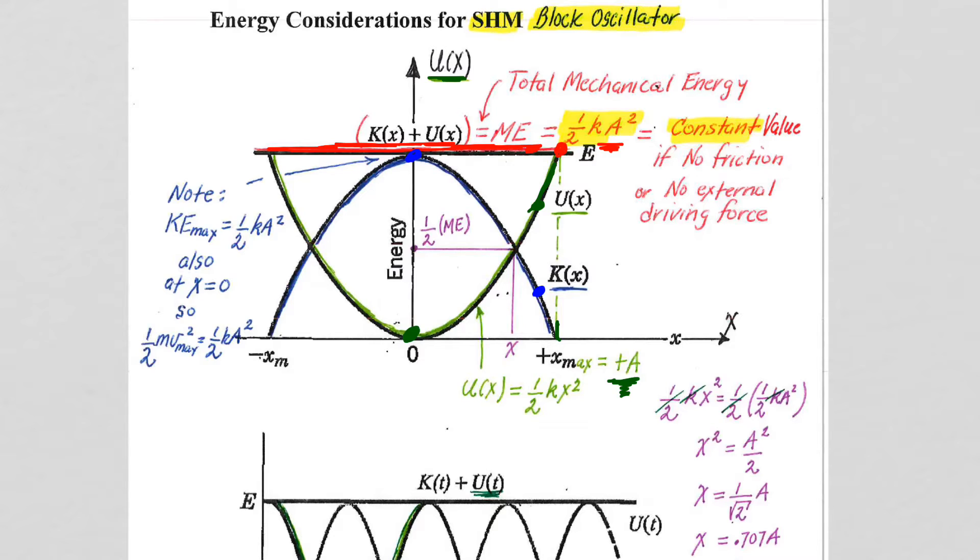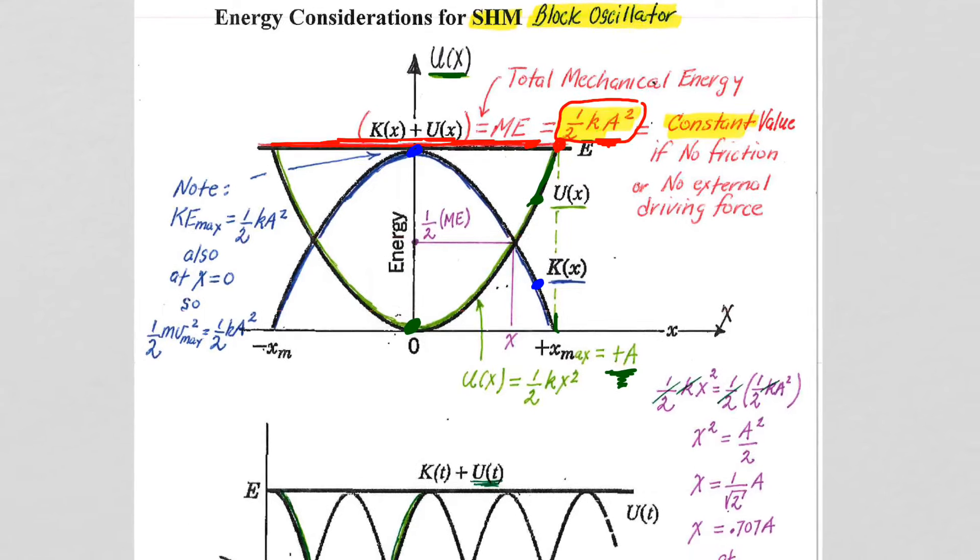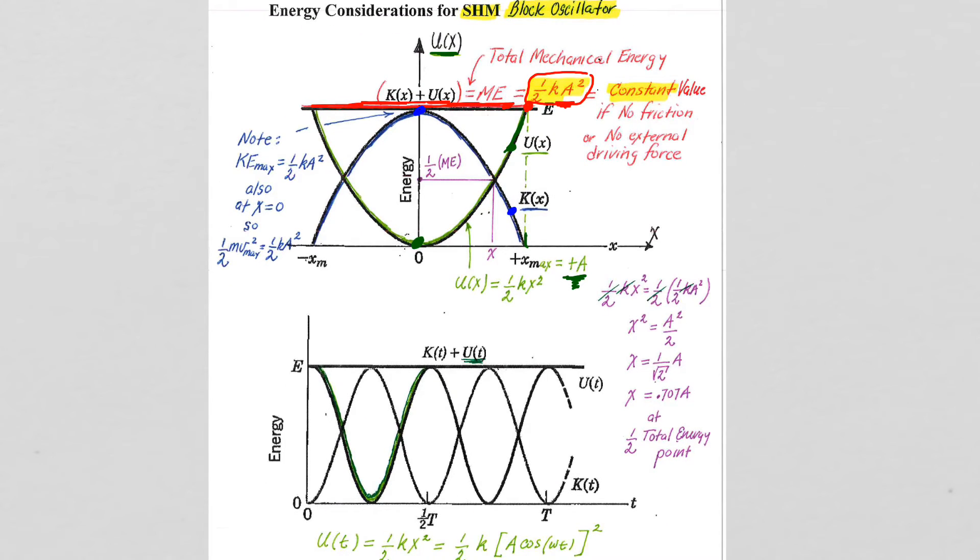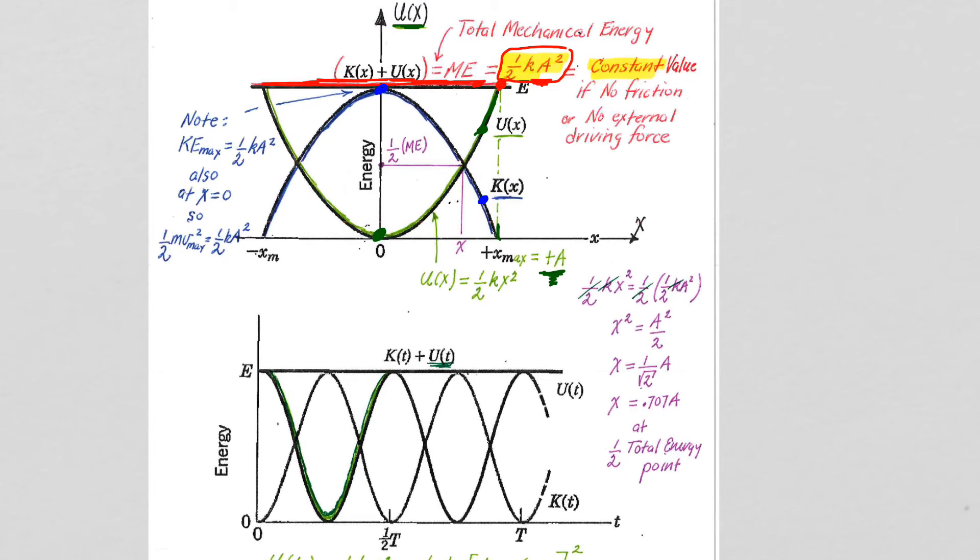So you really want to think of one-half ka squared as an actual joule value, and that's locked in. So even if you're not given a value, think of it as a locked in joule value, and then it's going to be shared between potential and kinetic as we go along. And obviously for the block oscillator, we are oscillating back and forth.